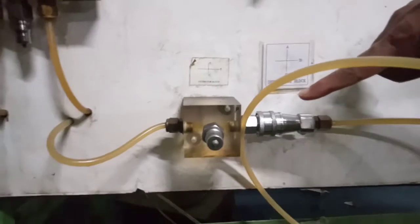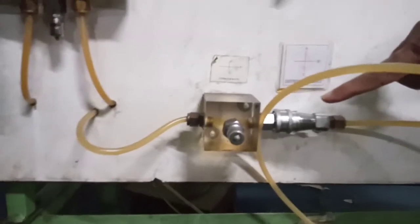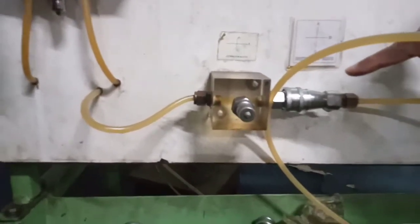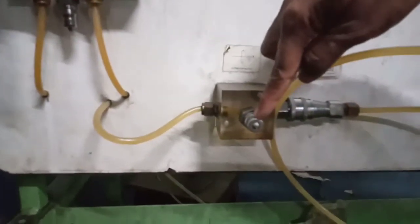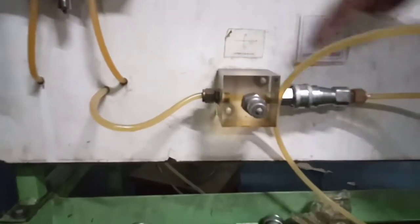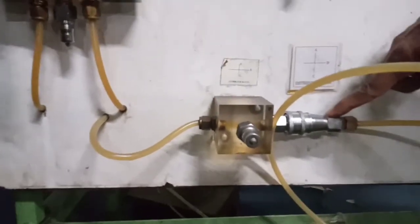So, this we call it as a distributor. If you want to give power supply or rather pressurized oil to more than one places, then we have these two connections. So, one connection can be used for one actuator. This can be used for another actuator. Of course, through a DC valve. Now,